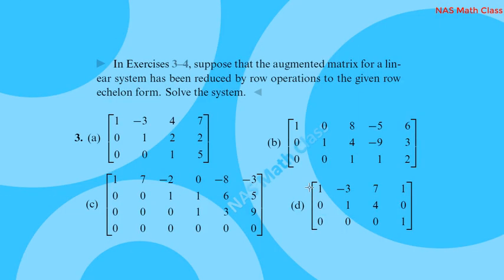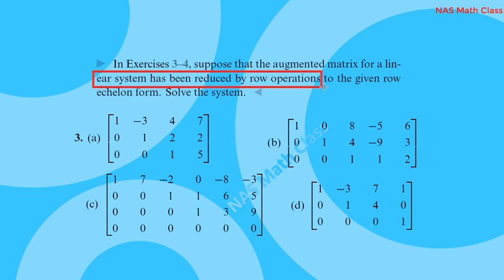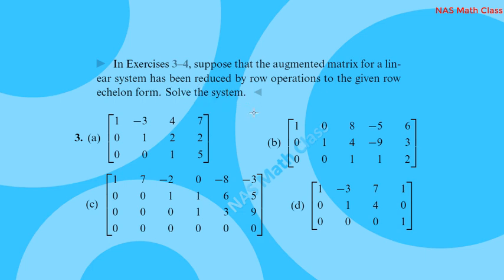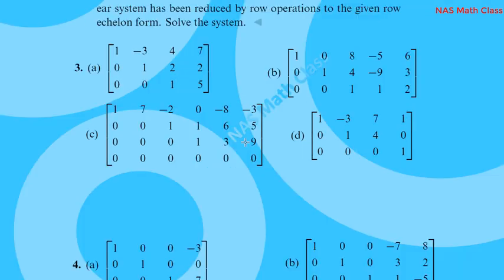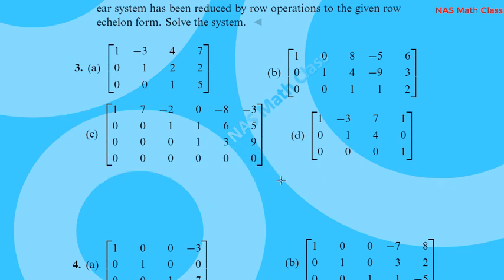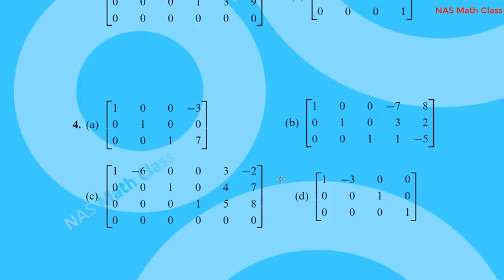Suppose that an augmented matrix for a linear system has been reduced by row operations to the given row echelon form — solve the system. Using elementary row operations, we reduce to row echelon form, and then to reduced row echelon form. We now solve this system.